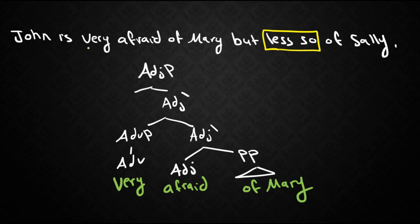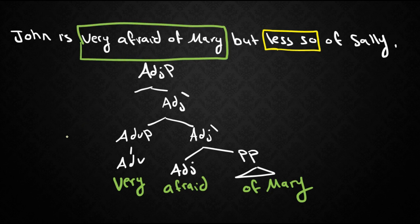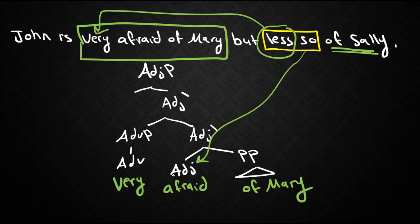So this is what the adjective phrase very afraid of Mary would look like in x-bar notation. Notice here how we still have the prepositional phrase of Sally. Less here is just like very. So really the only thing we changed or used so to replace was the head afraid. So this would read out John is very afraid of Mary but less afraid of Sally.